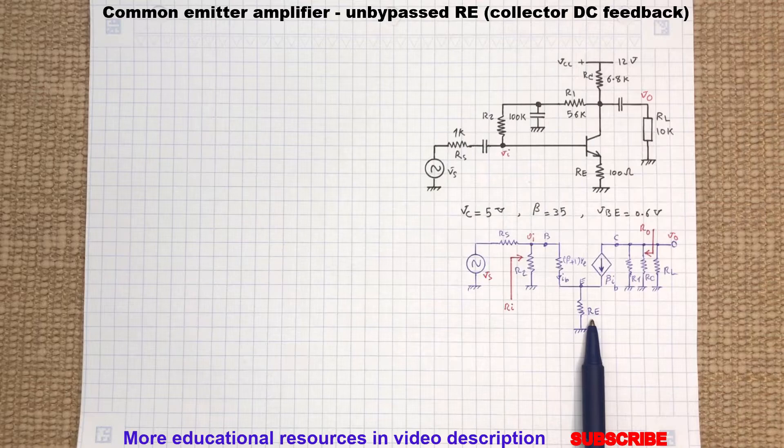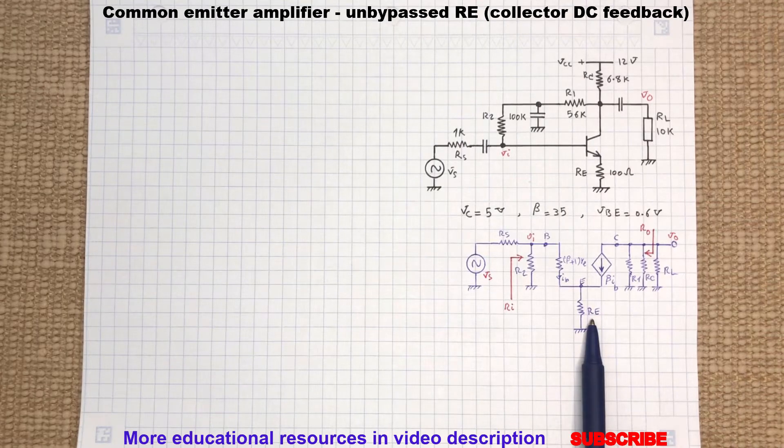Please note that here the biasing resistor RE at the emitter is not bypassed to the ground by a capacitor, so it will appear between emitter and ground in the AC model.